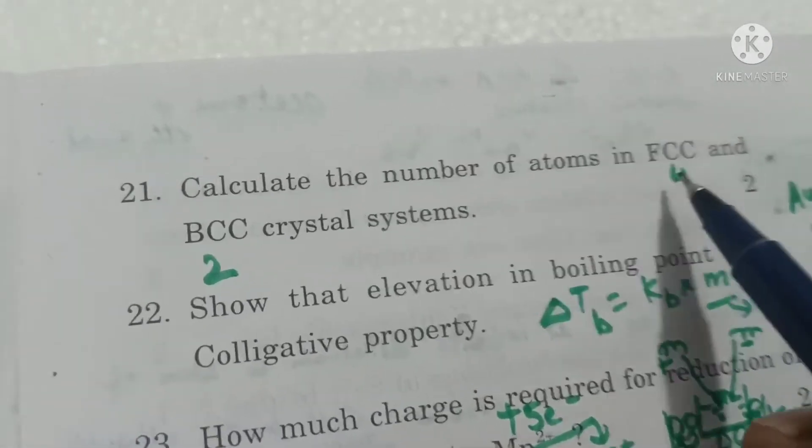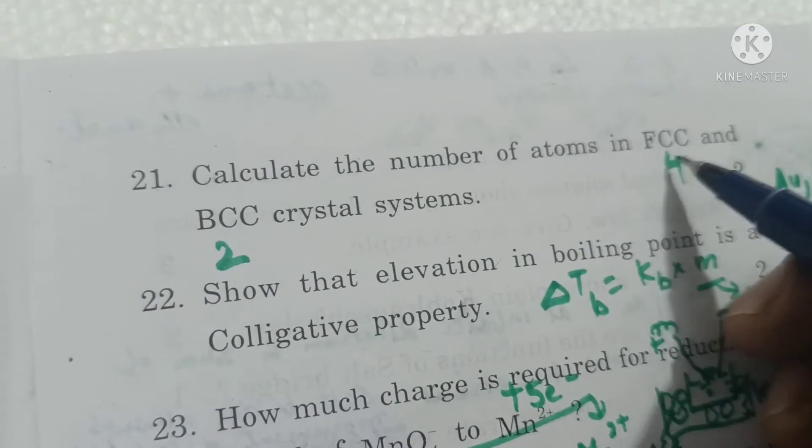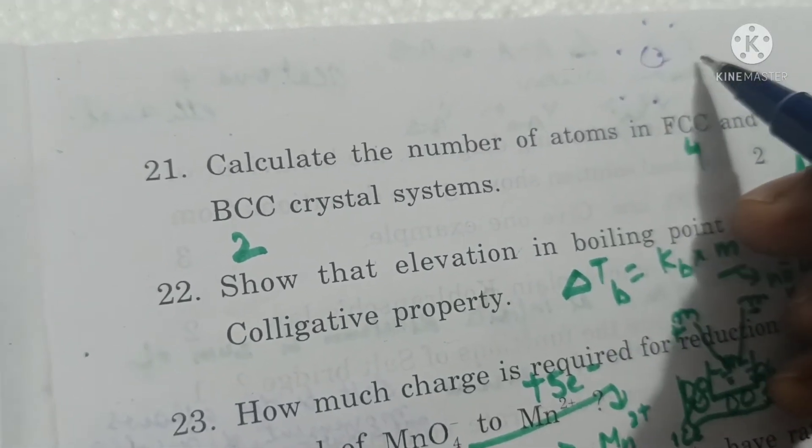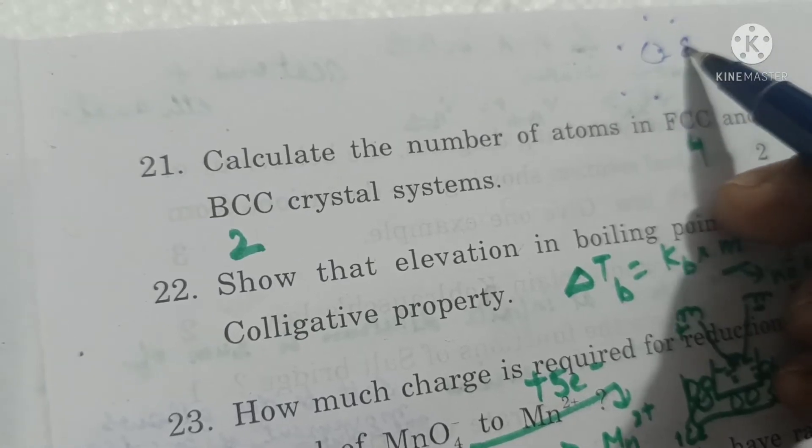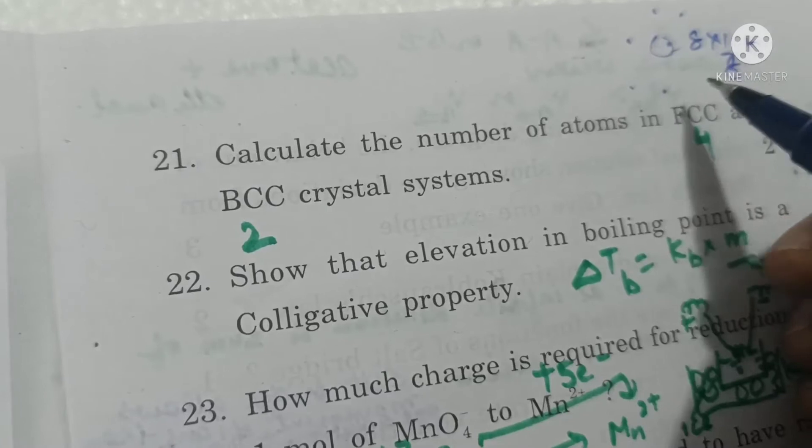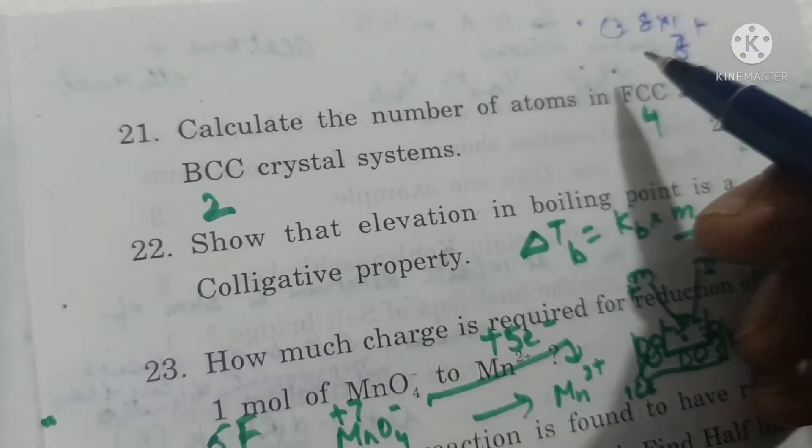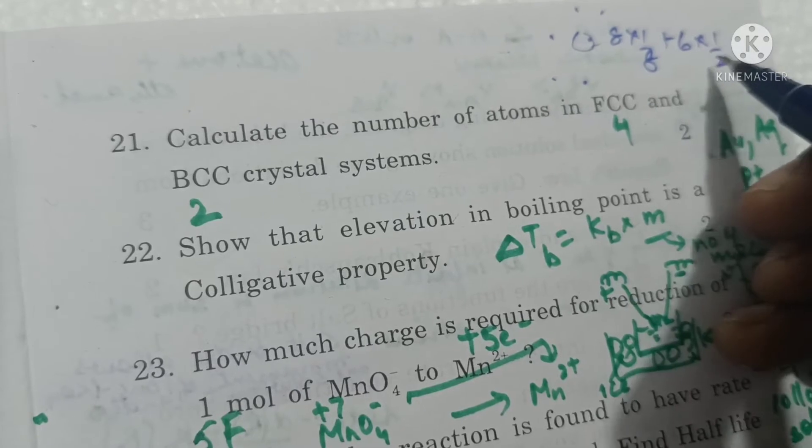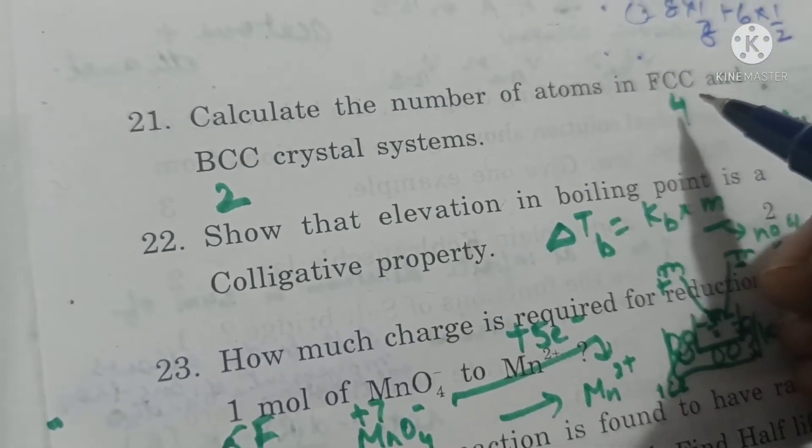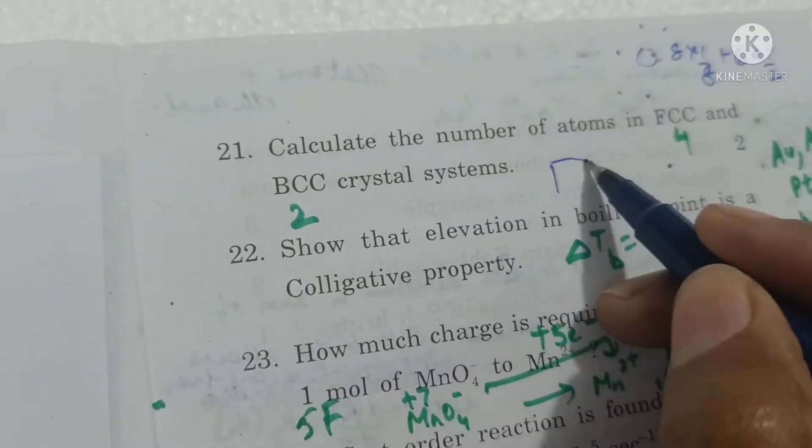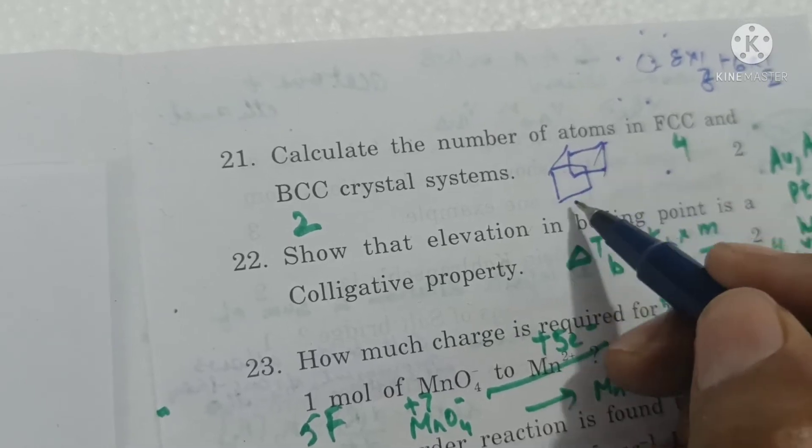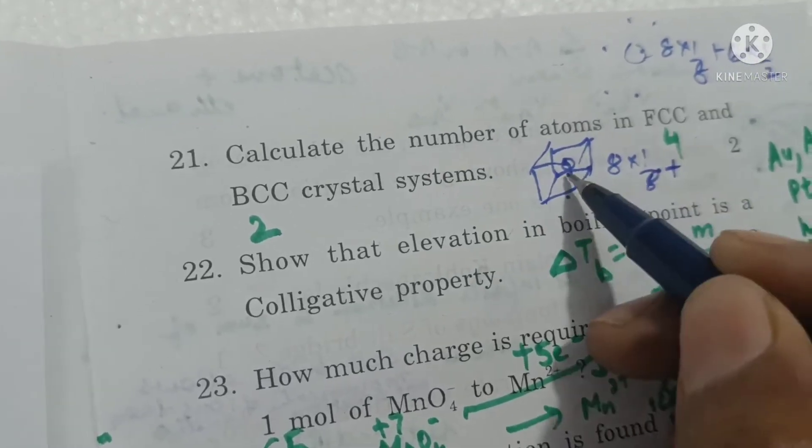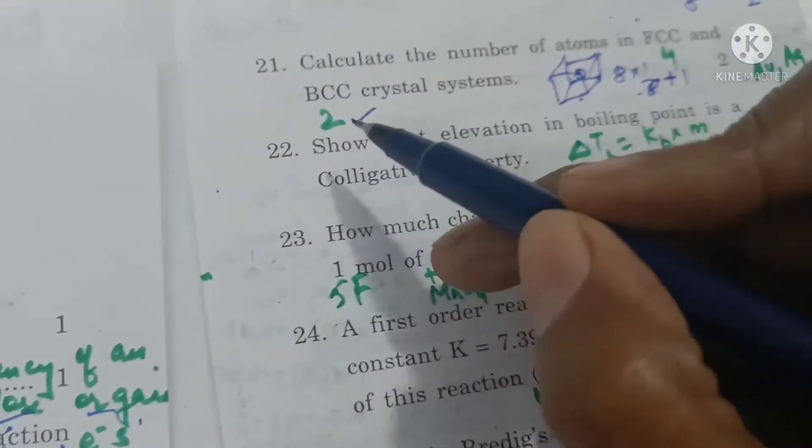Calculate the number of atoms in FCC and BCC. In face centered structure, atoms are present at the 8 corners of a unit cell. Each atom is shared by 8 unit cells, so contribution of atoms at the corner is 8 into 1 by 8. Plus there are 6 atoms present at the center of each of the 6 faces, each face is shared by 2 unit cells, so contribution is 1 by 2. So 6 into 1 by 2 is 3, and 3 plus 1 is 4. In case of body centered, atoms are present at 8 corners and also in the center of the body. So the number of atoms will be 8 into 1 by 8 plus 1 in the body, so 2 in body centered.